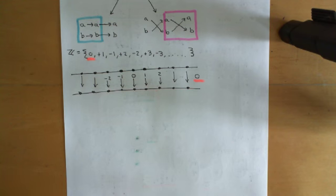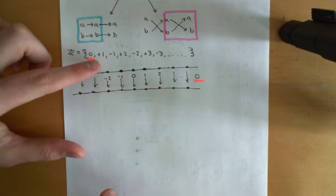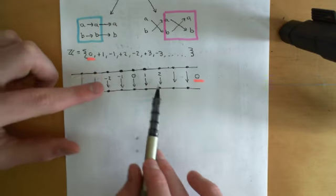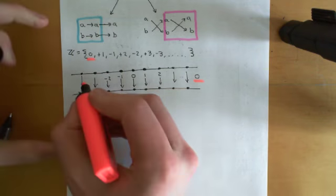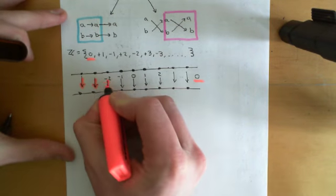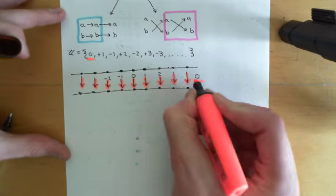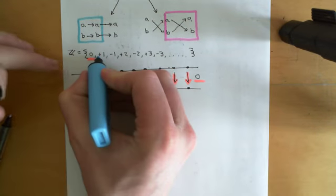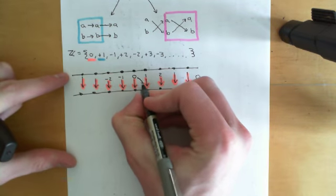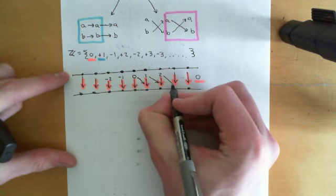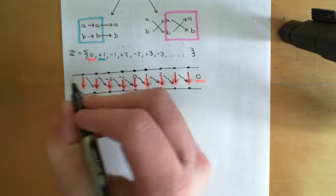Now let's think of what plus one is going to represent. Plus one represents the set permutation which moves all the points one to the right. I'll colour-code this: the set permutation corresponding to zero is shown in one colour, and plus one in blue represents the set permutation where everything is moved one to the right.